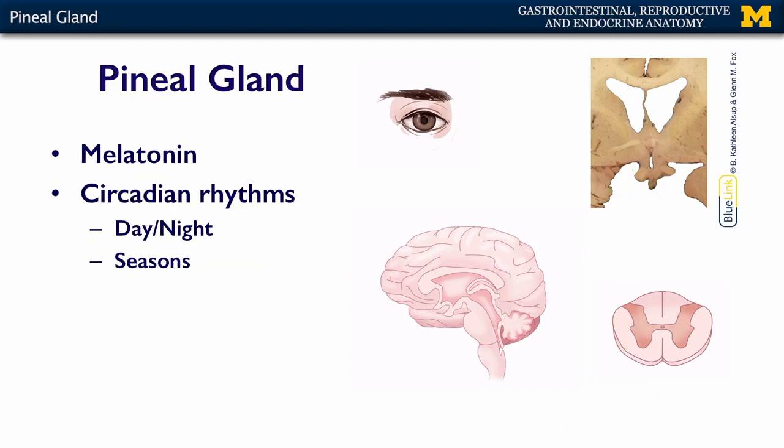Melatonin is the secretory product of the pineal gland. When it's secreted, it coordinates the rest of your body to control your circadian rhythms. Your circadian rhythms have to do with how your body knows whether it's day or night — and it's not just that you can see light or not. Your whole body that isn't photosensitive has to know, and this is how it knows, through the secretion of melatonin.